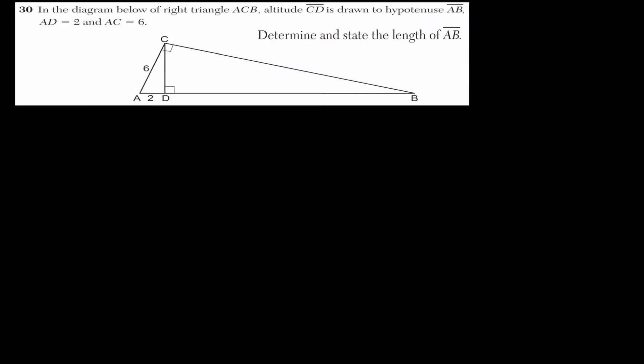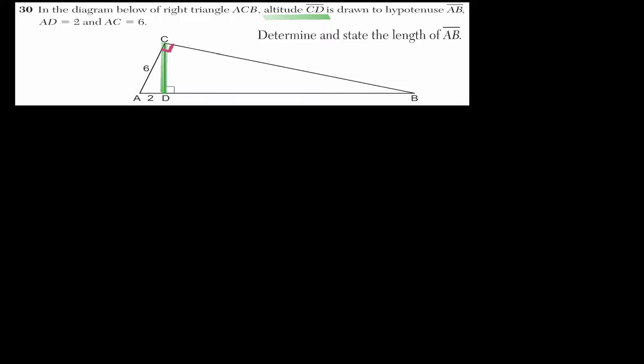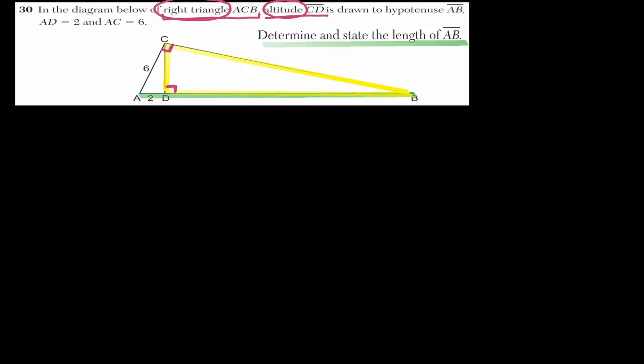In question 30, we have right triangle ACB where angle C = 90°, and we also have altitude CD. The intersection of the altitude with AB is 90 degrees. We want to determine the length of line segment AB. This is a specific scenario: any time we have a right triangle with its altitude drawn, we have special relationships between the triangles created.